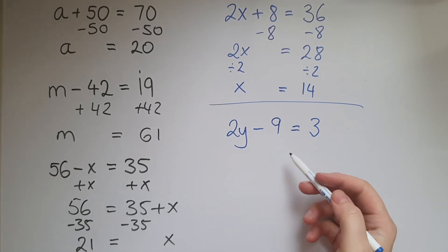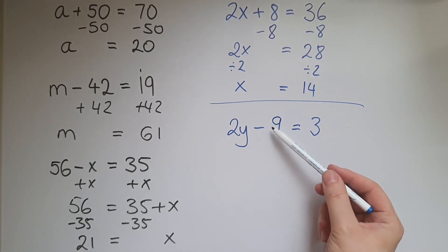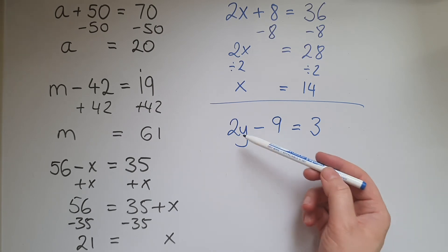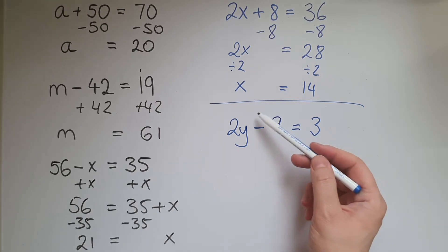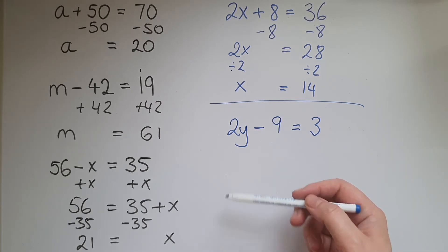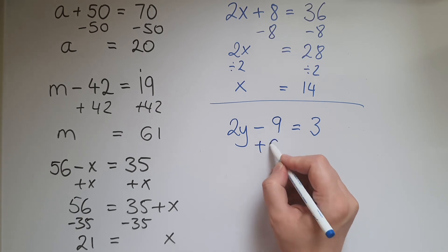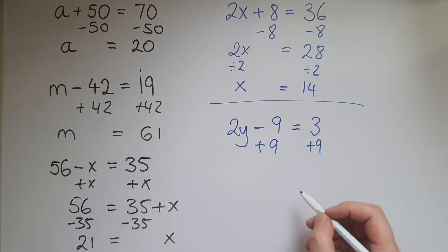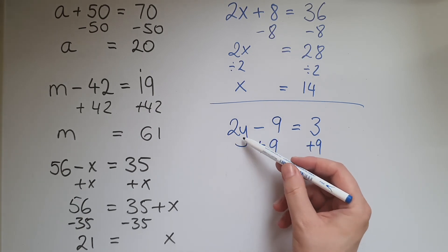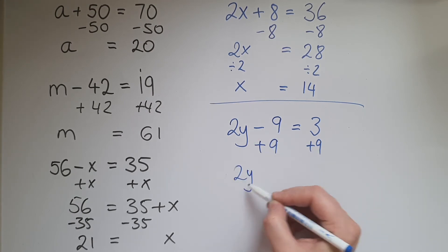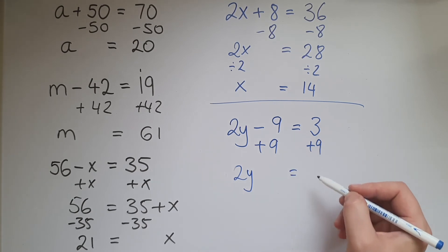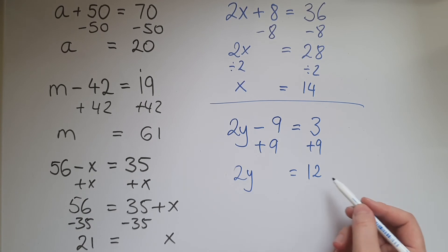Looking at this other one, we've got 2y - 9 = 3. So of course we need to find the value of the unknown which is y. So we're going to get rid of this negative 9, so to undo it we add 9 both sides of course. So 2y take away 9 add 9 gives us just 2y, and 3 add 9 is 12. So 2y is 12.